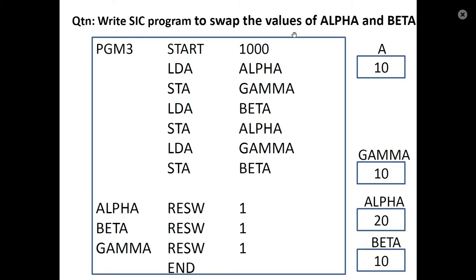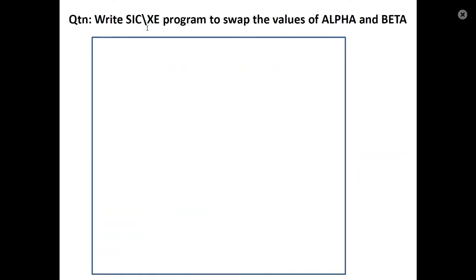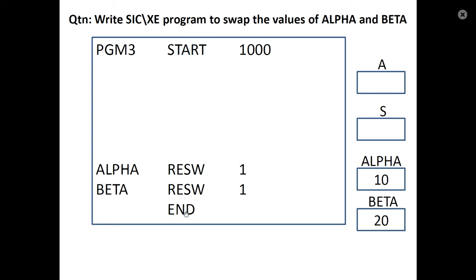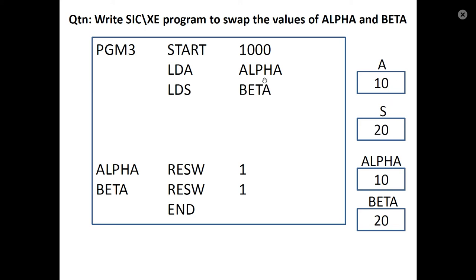This is the SIC program to swap the values of alpha and beta. Next is the equivalent SIC XE program. Similarly, start and end instructions, alpha and beta variables as integer arrays of size 1, with garbage values alpha 10 and beta 20. In SIC XE we use extra register S instead of a temporary memory location gamma. LDA alpha loads accumulator with 10. LDS beta loads S with 20. STA beta stores accumulator content 10 to beta. Then STR S, alpha stores S content 20 to alpha.